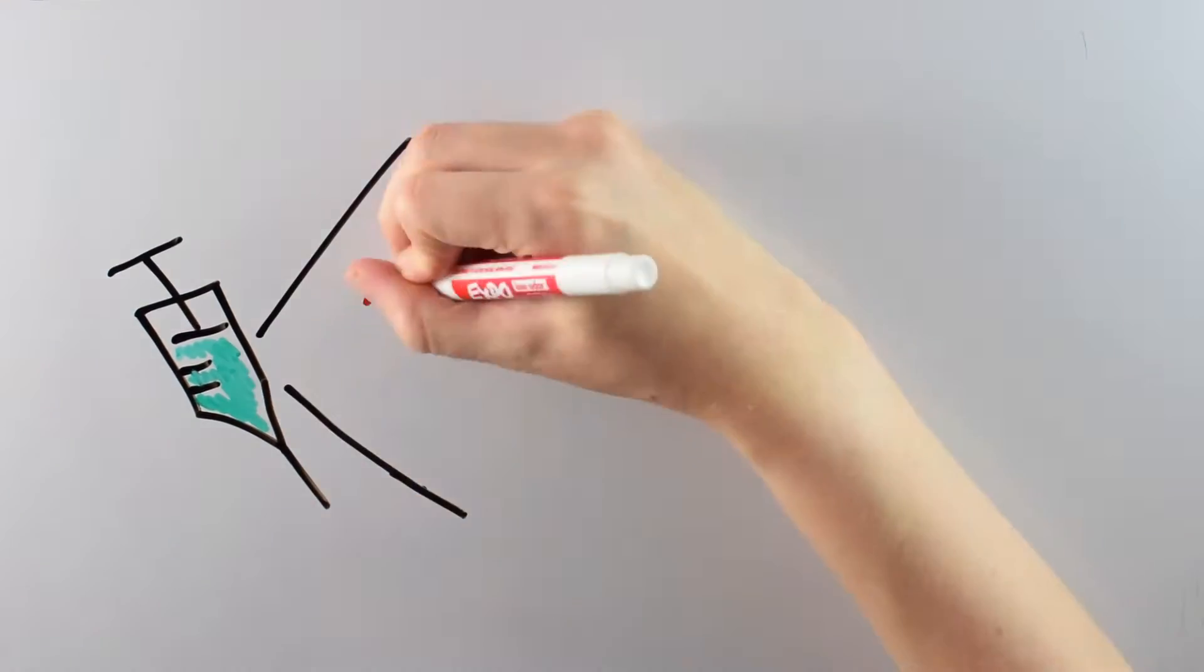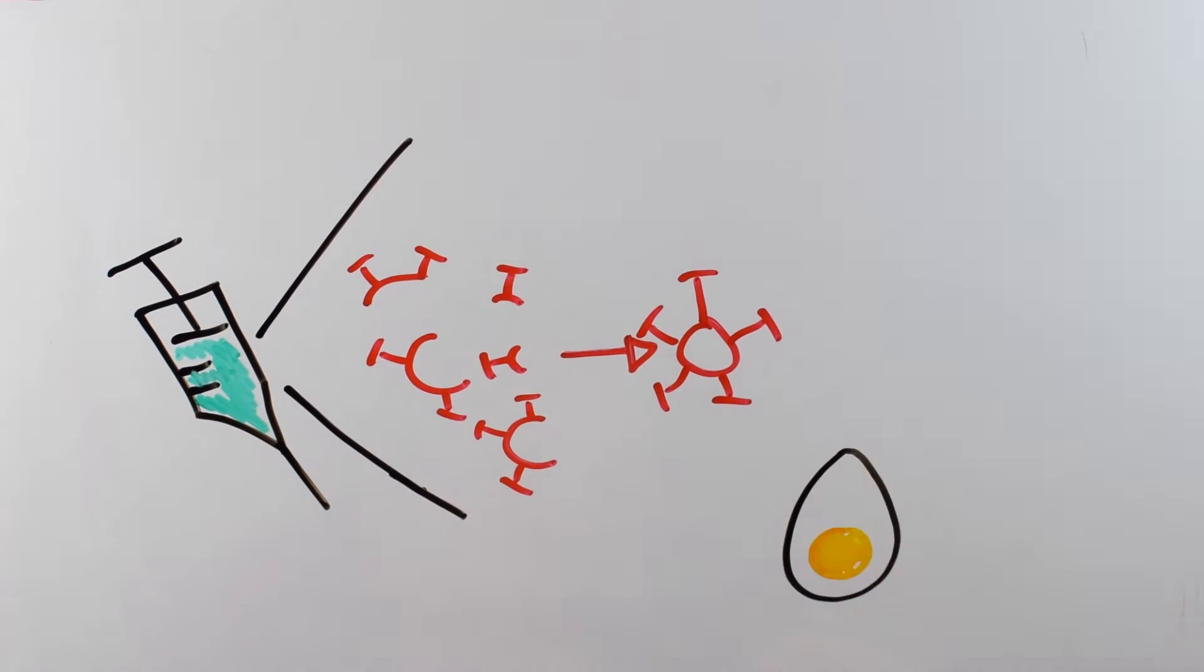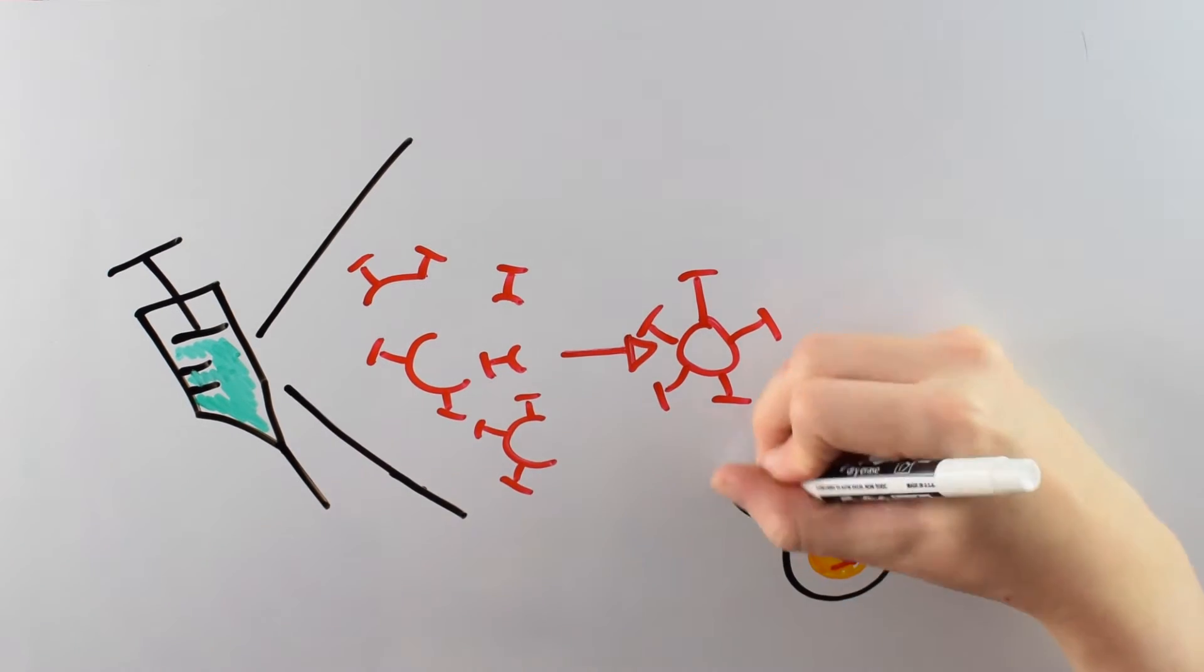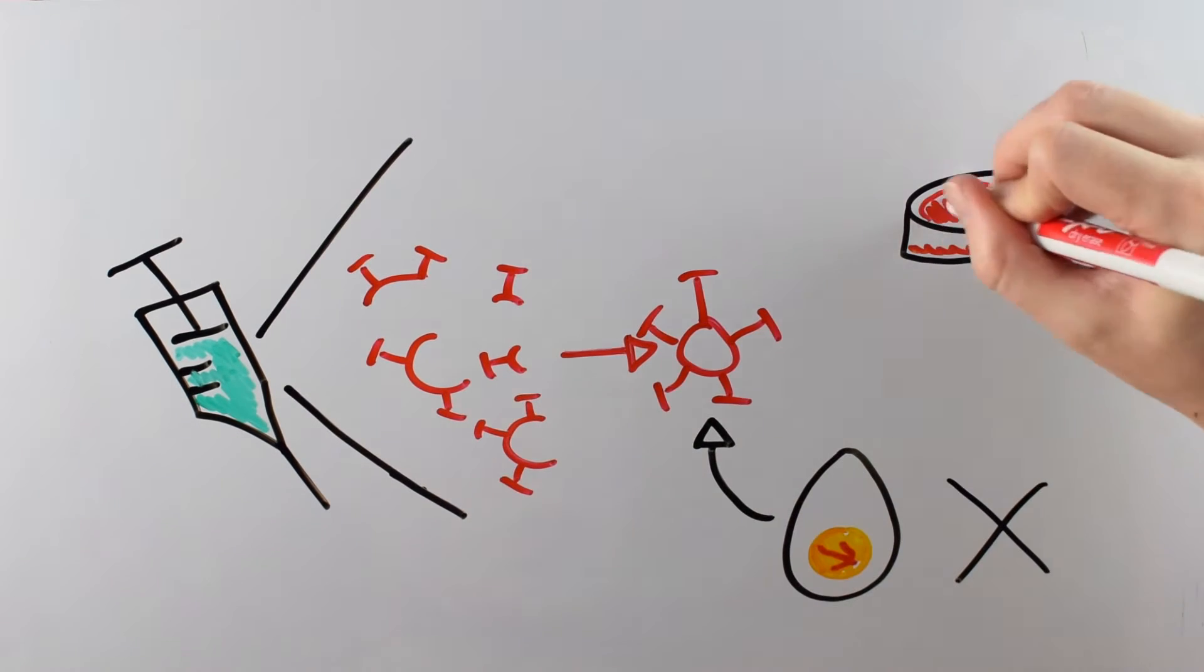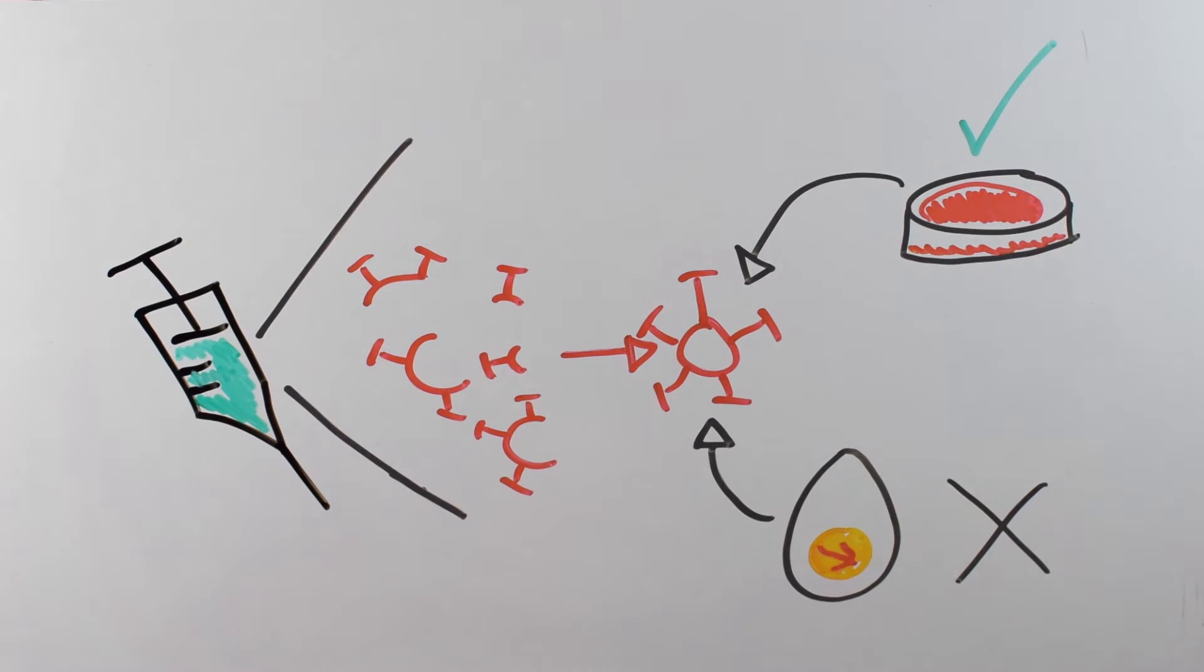And that's because the flu virus that we grow for the vaccines are grown in eggs. This paper recommends that instead of growing virus for the vaccines in eggs, we should start growing them in human cells in a dish. In order to get why eggs might be the problem, we should learn a little more about the flu vaccine and why we use eggs in the first place.